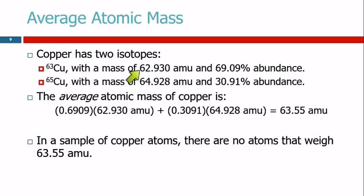The atomic mass is going to be very close to the mass number, but it's not exactly the same. So here is its atomic mass. And 69.09% of copper is copper-63.